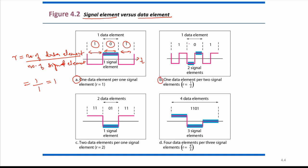In case B, one data element — either zero or one — is sent using two signal elements. For the same time duration, there are two constant signal levels within one data element duration, meaning two signal elements are used. So R equals one divided by two.